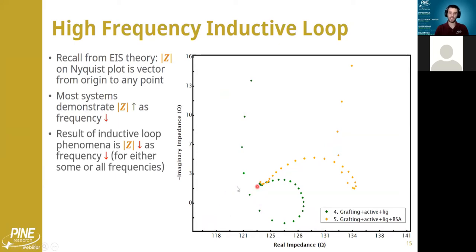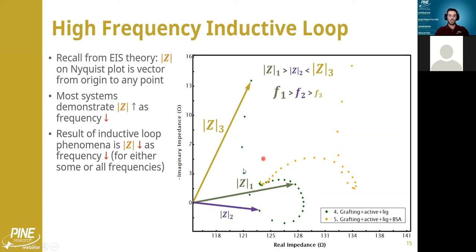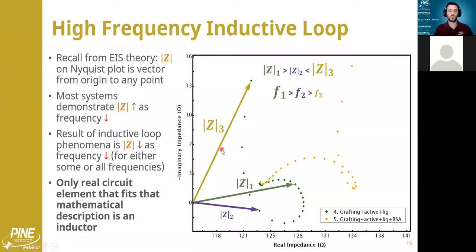So looking at it through the lens of what I just mentioned in terms of the vector and that distance being my impedance magnitude, what I can see is that as I move along my Nyquist plot I go from some value to a lower value. These points are getting closer to the origin and then they get farther away. So for some period of time I have the reverse trend. As the frequency drops the impedance also drops, and then as the frequency continues to drop it goes back up.